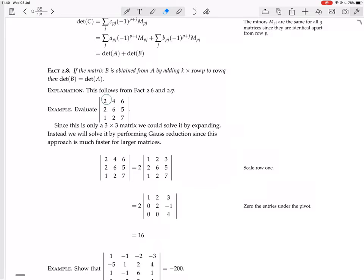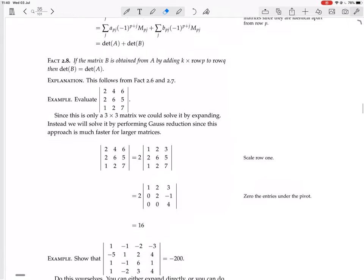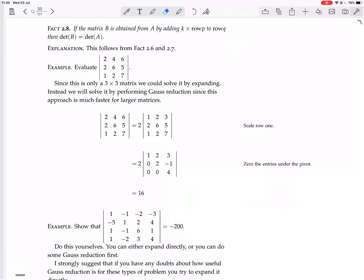So, evaluate the determinant of 2, 4, 6, 2, 6, 5, 1, 2, 7. Start off by scaling row 1. So you divide row 1 by a half, and that means that the determinants will also be divided by a half. So you need times it by 2 to keep it equal. You can also think of it as pull out 2 from row 1, and you have 1, 2, 3 left as row 1.